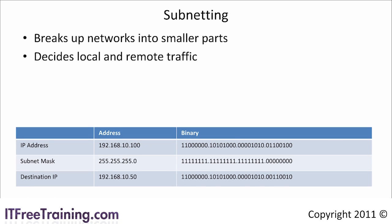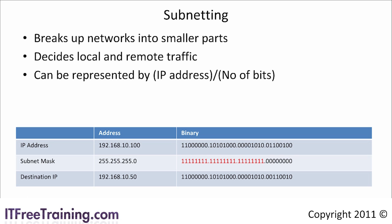When the subnet mask is shown in binary, you can see that it is an unbroken list of ones followed by zeros. Ones must always be on the left and zeros on the right. Because of this, you can represent the subnet by the IP address slash number of bits. If I were to show this IP address and subnet mask using slash notation, it would be 192.168.10.100/24, as there are 24 one-bits in the subnet mask.